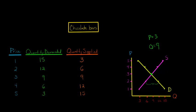Think about this gap here. See that gap? People at the price of $2 are wanting 12 chocolate bars, but they're only getting 6. There are only 6 being supplied. So we'd say if we set the price at $2, there would be a shortage.